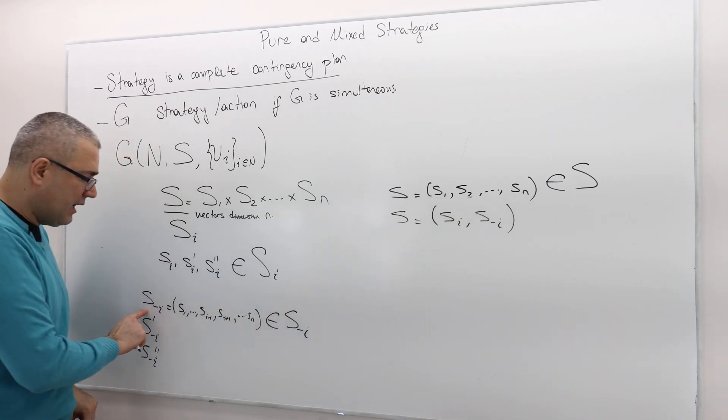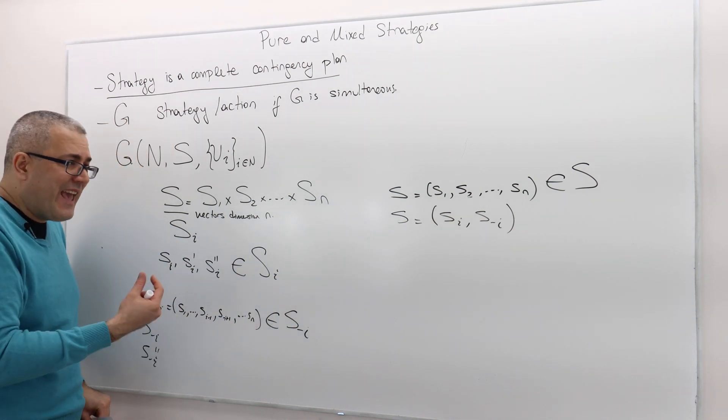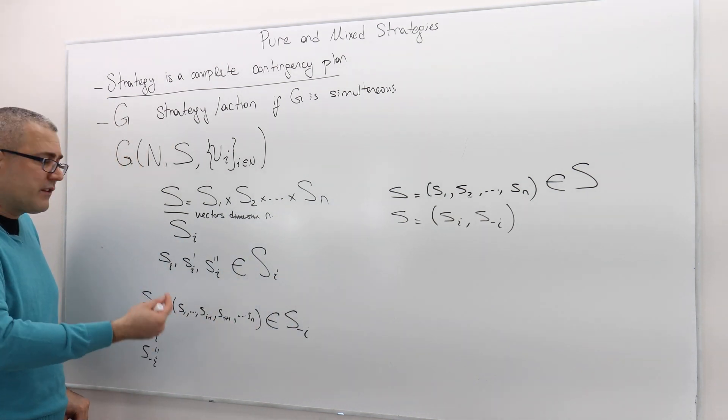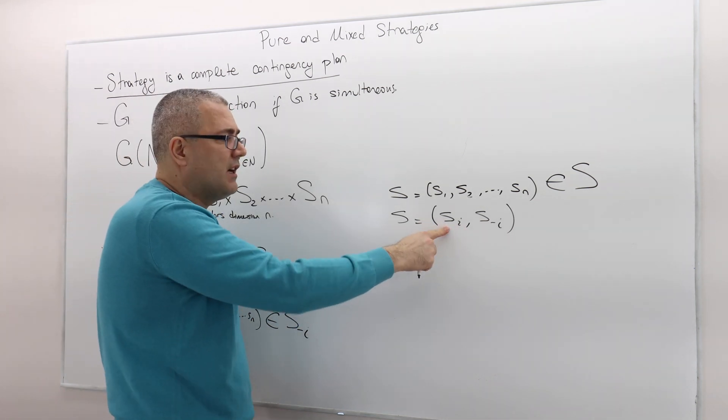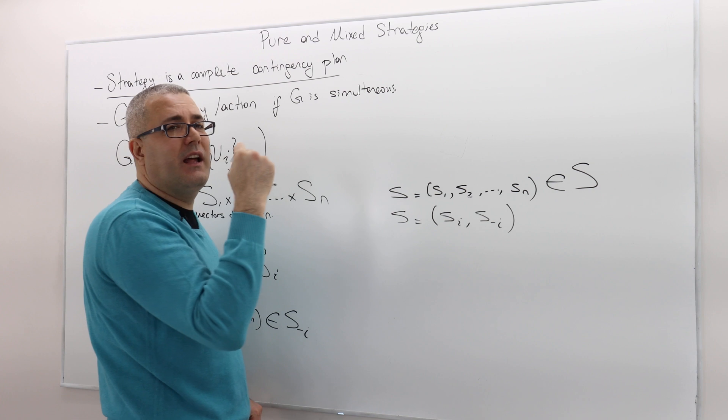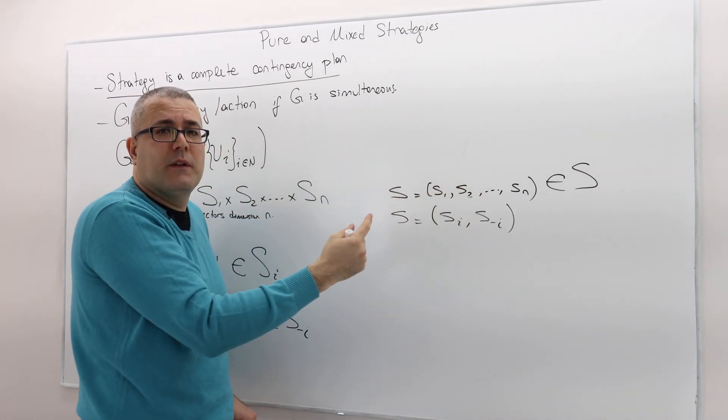Don't forget, S minus I is a vector again. A vector with N minus 1 elements. Together with S_I, this is a vector of dimension N, which is equal to this one.